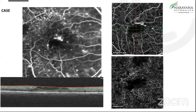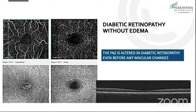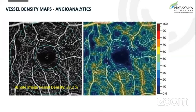This is another patient where we were able to see the telangiectatic vessels at the ovoid avascular zone in a patient with edema. Importantly, even in patients without any edema, we are able to show that the FAZ was altered even before clinical changes appear. That means the pathology happens much earlier in the course of the disease, and it might actually help us in better interventions, whether systemic or local. These are vascular density maps — you can see whole image vessel density, or quadrant-wise or sector-wise analysis.